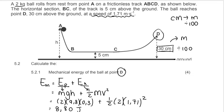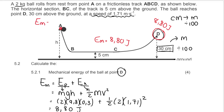My calculator gives 8.041..., which rounds to 8.80 joules. Remember, energy is measured in joules. Importantly, what we just calculated is the mechanical energy of the system. At point D the mechanical energy is 8.80 J — and because this is an isolated system with no friction, the mechanical energy at points C, B, and A will also be 8.80 J.